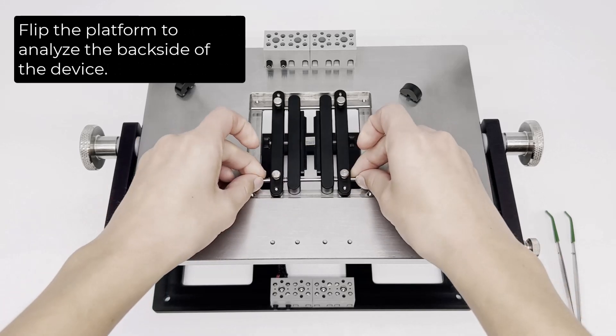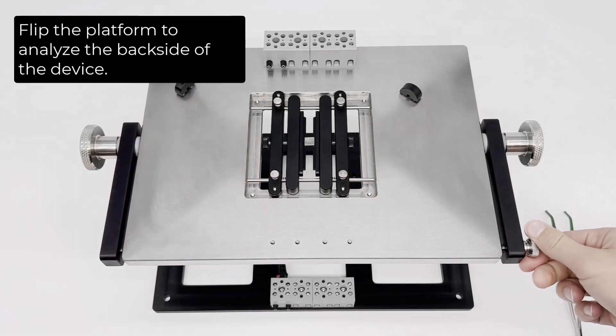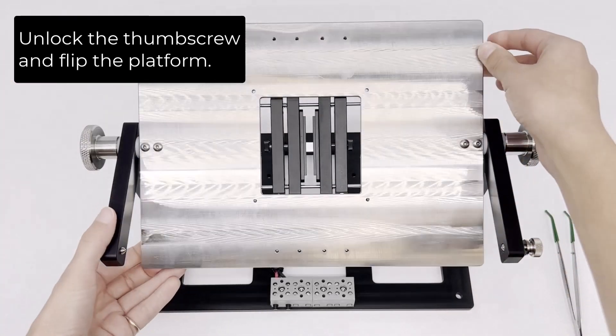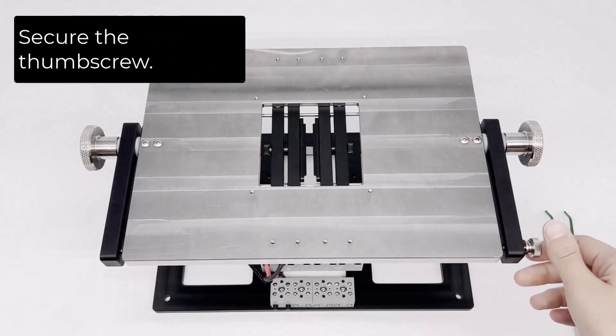Flip the platform to analyze the backside. Unlock the thumb screw and flip the platform. Secure the thumb screw.